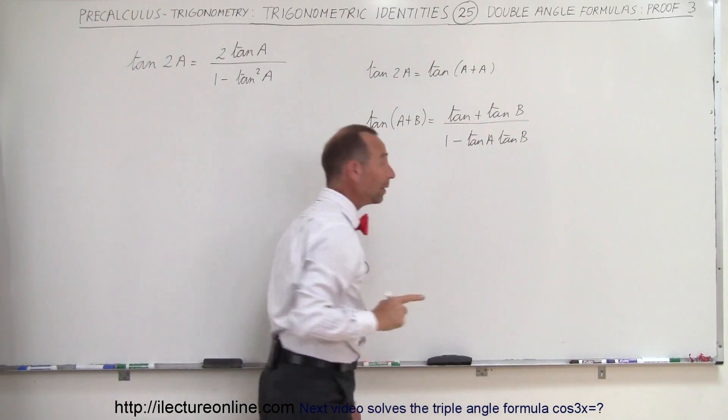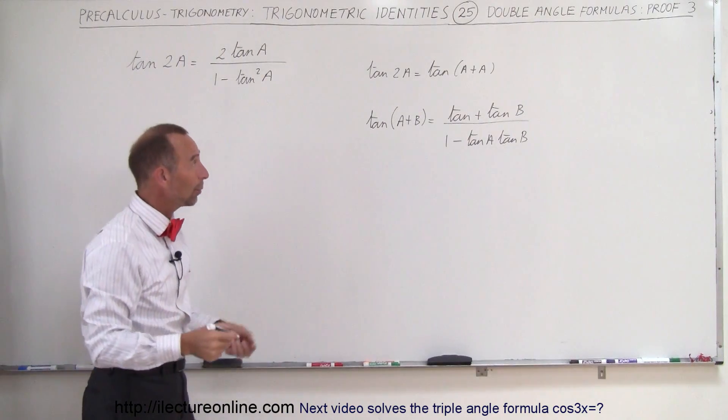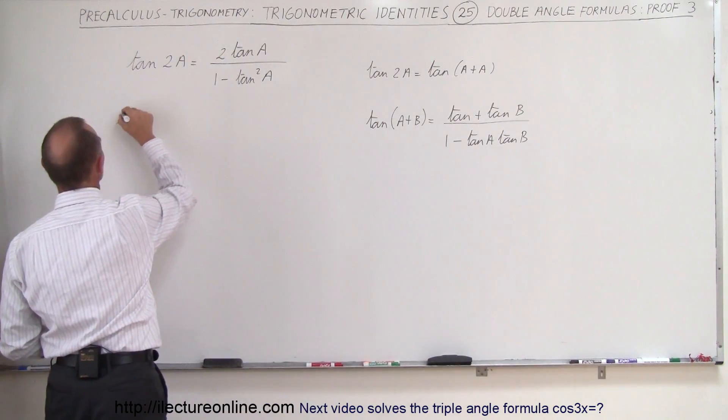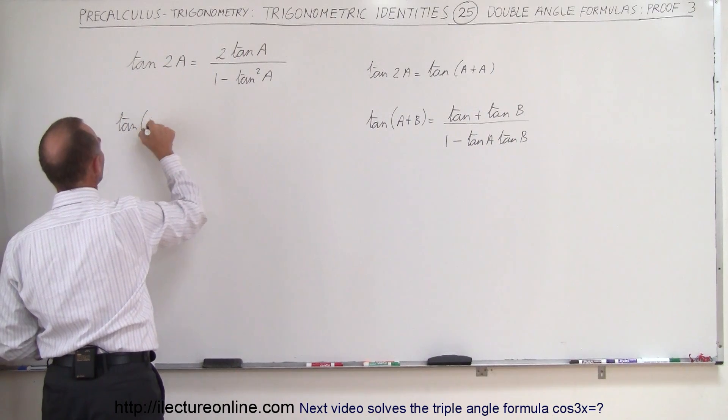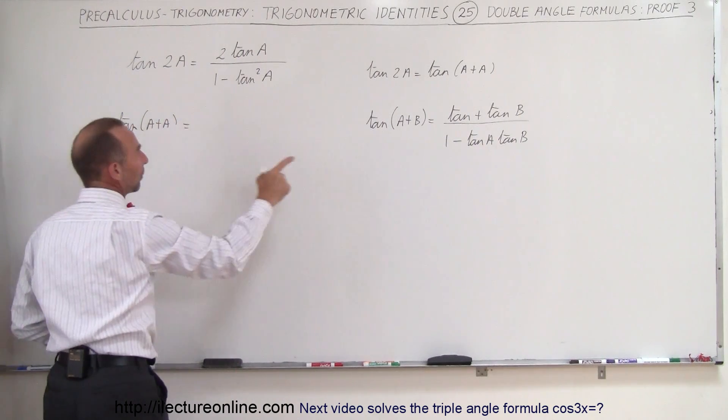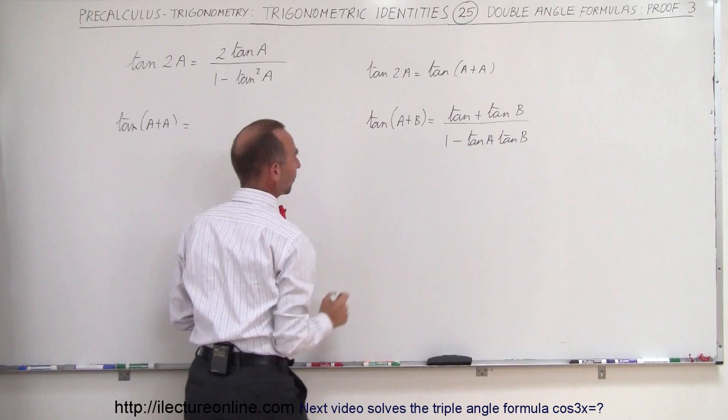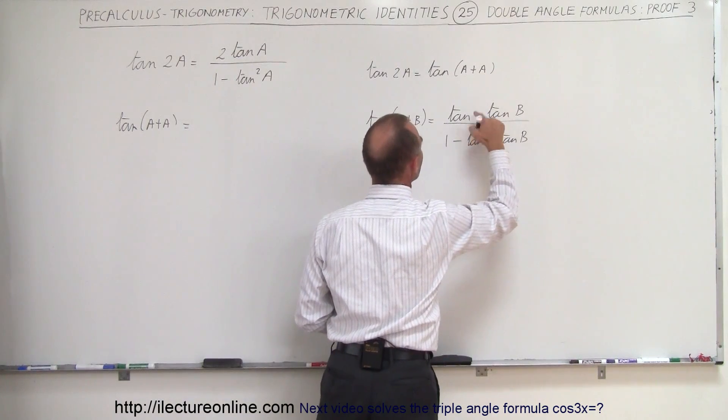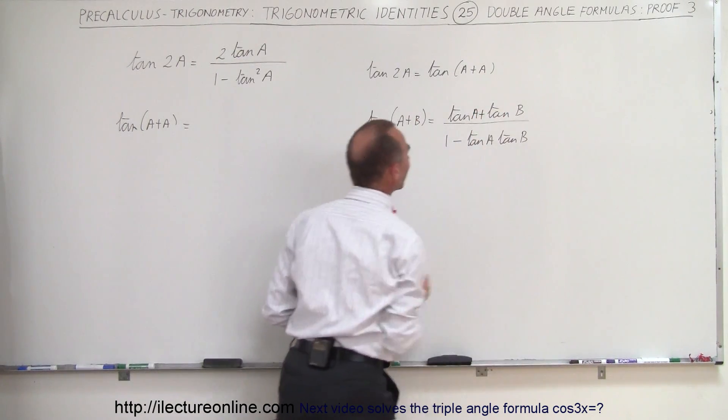Now if we replace all b's by a's, what do we get? So we can come back over here and say this is the same as the tangent of a plus a. And then we write the same things over there, but ooh, I forgot something here. I forgot my a. Tangent of a plus tangent of b.